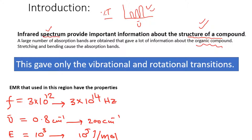In IR spectroscopy, unlike UV-visible spectroscopy where absorption is due to electronic transitions — meaning electrons move from the ground state to a higher energy state — in IR we observe rotational and vibrational transitions instead.